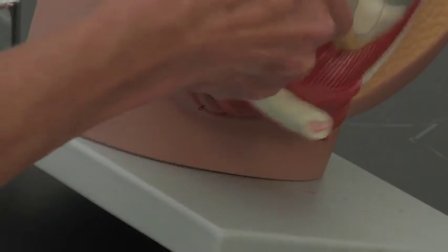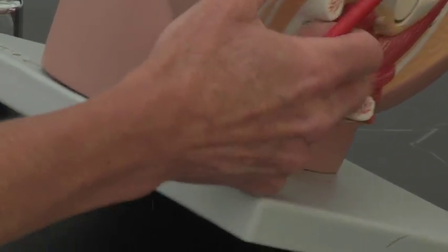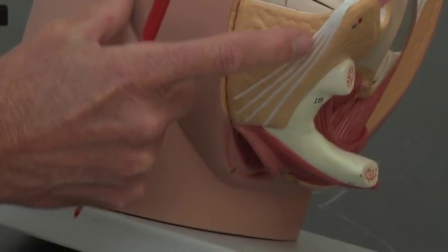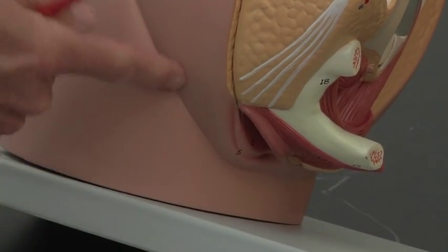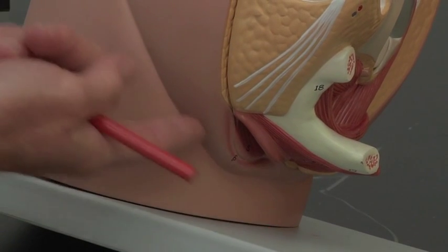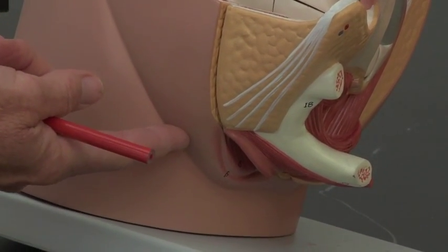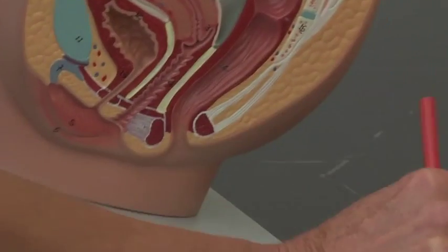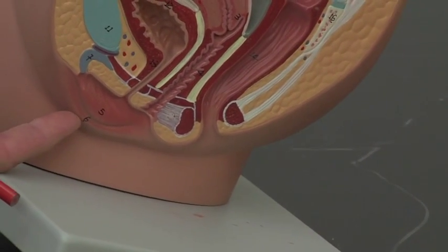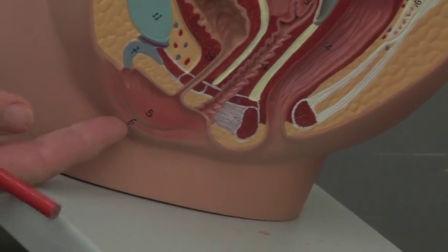If you put this back together, well it's been cut off on this side, but imagine the mons pubis comes down and it tapers into a lip. This big outer lip here is known as the labia majora. You can see the labia majora is this number six right here.